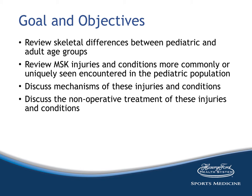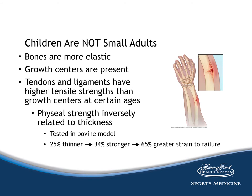To begin with, as any pediatric musculoskeletal lecture will, children are not small adults. Their bones are more elastic, and they have growth centers present. Tendons and ligaments have higher tensile strengths than the growth centers at certain ages. Physeal strength is inversely related to the thickness of the physis — tested in a bovine model, a 25% thinner space is 34% stronger, with a 65% greater strain-to-failure level.